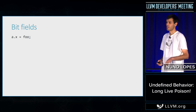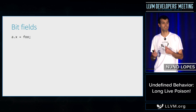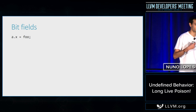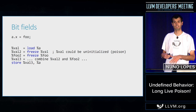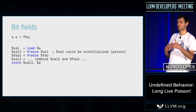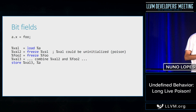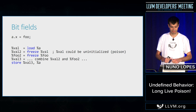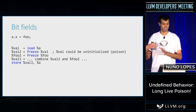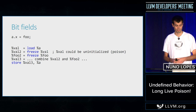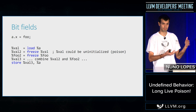For bit fields, since we no longer have undef, a load from an uninitialized value is poison. We need to change how Clang lowers bit fields. The approach we've implemented in our prototype: you load the value, freeze it because it might be the first time you're loading this bit field, freeze the value you're storing, then combine them with bitwise operations and store it back. From that point on, the bit field will always be non-poison.